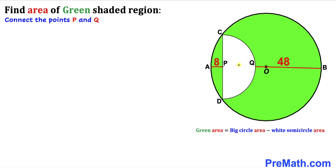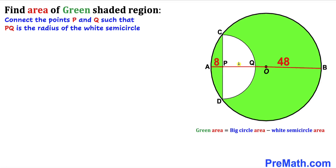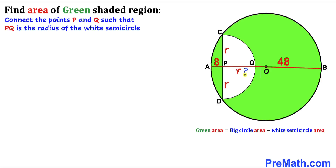Let's connect points P and Q as shown in this diagram. We can see that line segment PQ is the radius of the white semicircle. Let me represent this radius by lowercase r. We can also see that CP and PD are also radii of the very same white semicircle. Our task is now to find the value of r.